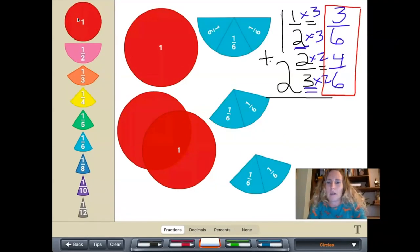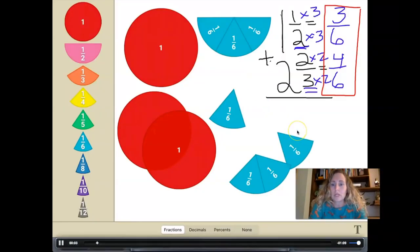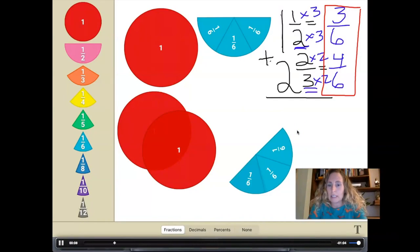And so what I've done is I have now shown that indeed one half is equal to three sixths and that two thirds is indeed equal to four of these sixths. And now that our sixths are the same size pieces, we are able to join them together. And so I'm going to just move these guys together so we can see what we're doing when we're adding that fraction.